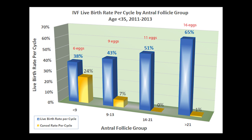Cycle cancellation rates for inadequate response to ovarian stimulating drugs are shown in the yellow columns. The average number of eggs retrieved for each antral group is shown in red text above the columns. IVF live birth rates are substantially lower and rates of cancellation are higher in women with lower antrals as compared to higher antrals.